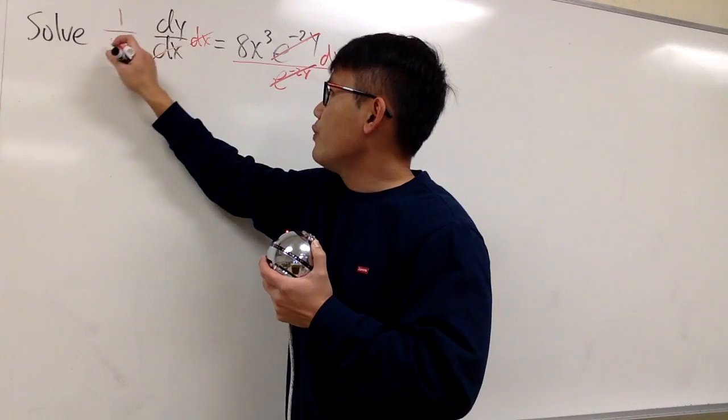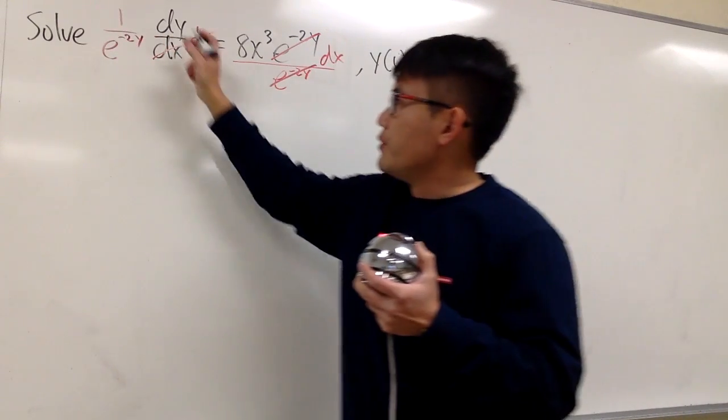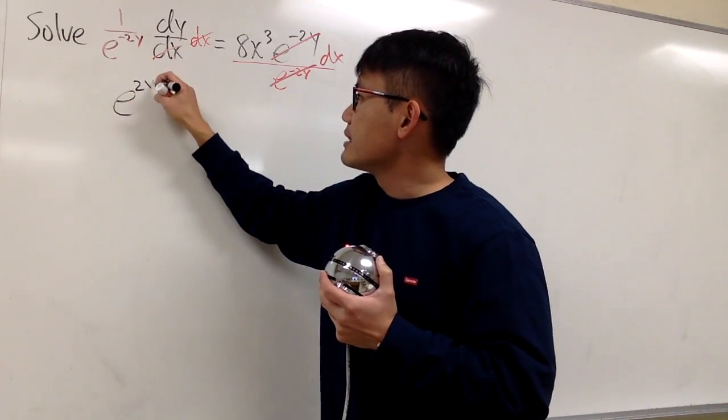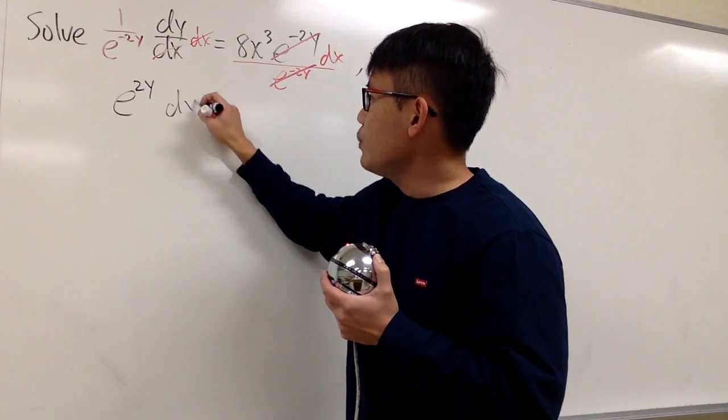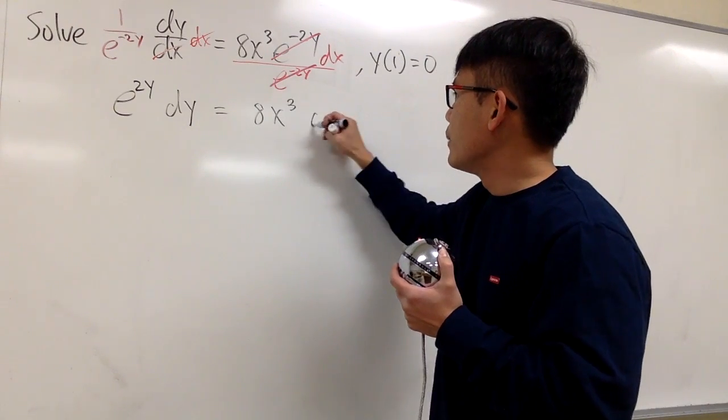On the left-hand side, I'll put this down as 1 over e to the negative 2y. All right, before I integrate this, let me write this down as e to the positive 2y. And then this is dy, and this is equal to 8x to the third power, and we have the dx.